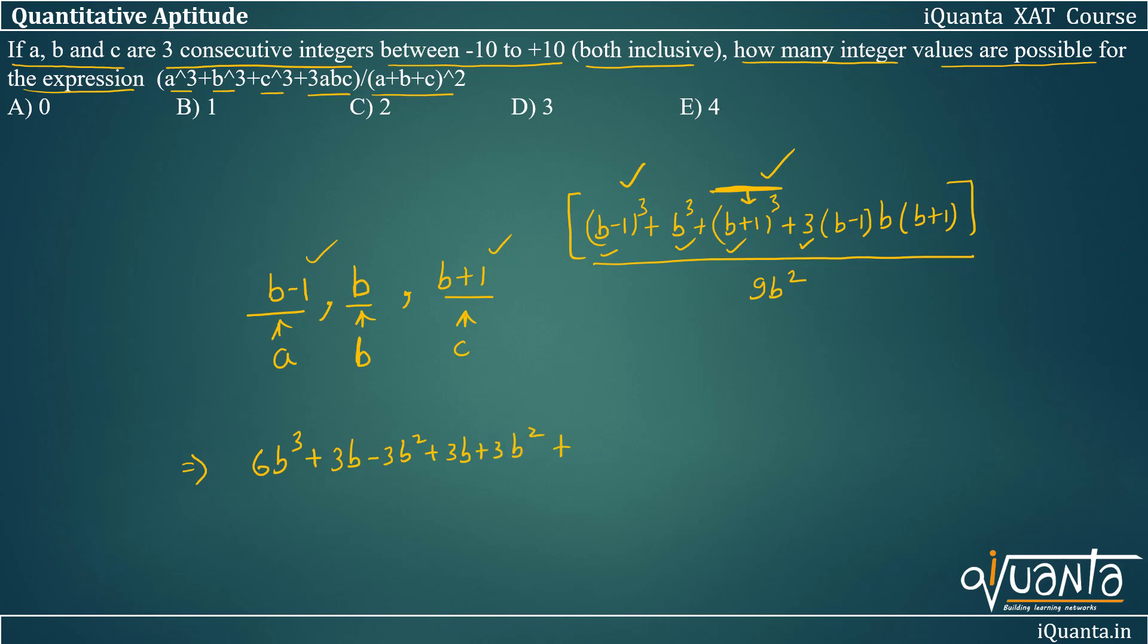And from the last one, we've already taken 3B³, we'll be getting -3B from it upon we'll have 9B².